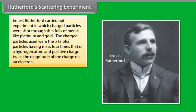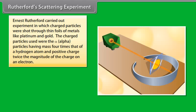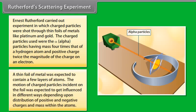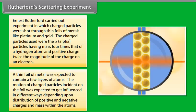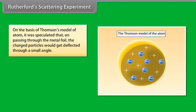Rutherford Scattering Experiment. Ernst Rutherford carried out experiment in which charged particles were shot through thin foils of metals like platinum and gold. The charged particles used were the alpha particles having mass four times that of a hydrogen atom and positive charge twice the magnitude of the charge of an electron. A thin foil of metal was expected to contain a few layers of atoms. The motion of charged particles incident on the foil was expected to get influenced in different ways depending upon distribution of positive and negative charges and mass within the atoms. On the basis of Thomson's model of atom, it was speculated that on passing through the metal foil, the charged particles would get deflected through a small angle.